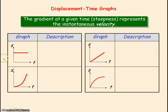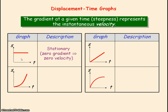For this first graph, where we have a horizontal line for the displacement, the displacement hasn't changed. You can see the gradient of a horizontal line is zero, so that's telling us the velocity is zero. This is representing stationary.